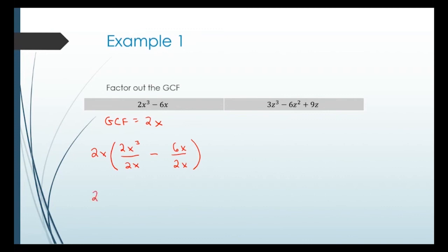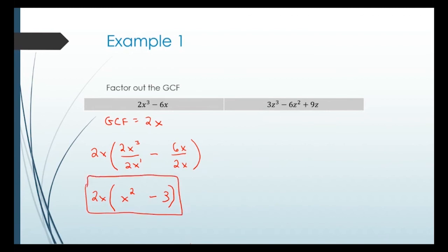Simplifying inside: 2 divided by 2 is 1, and x cubed over x uses the exponent rule — 3 minus 1 equals 2 — so we get x squared. Then 6 divided by 2 is 3, and the x's cancel. So the factored polynomial is 2x times (x squared minus 3). Once you understand the process, you can write the GCF and divide each term out mentally.